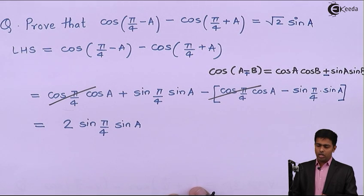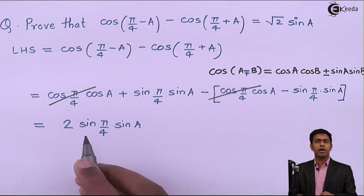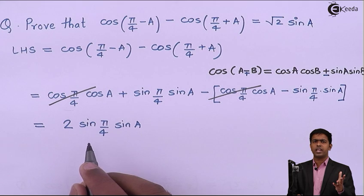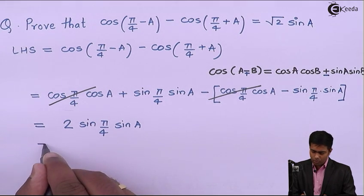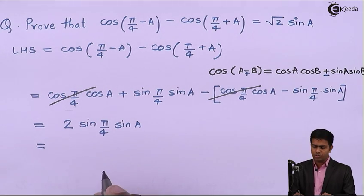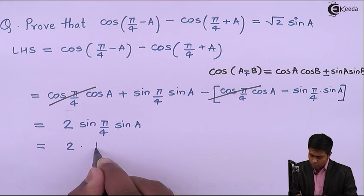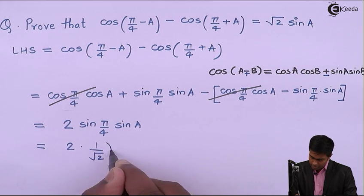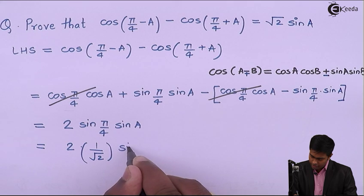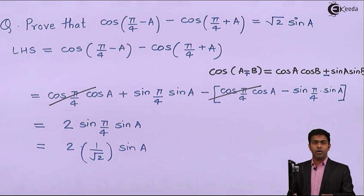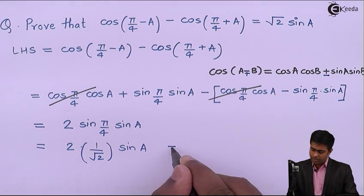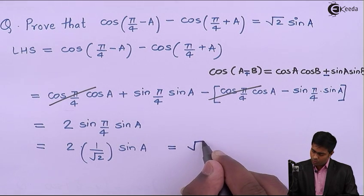Now let's substitute the value of sin(π/4). Sin(π/4), sin 45°, is 1/√2. So we will get 2 × 1/√2 × sin A.